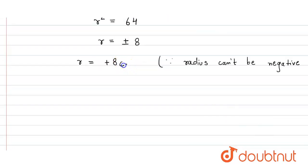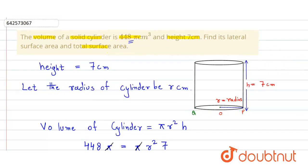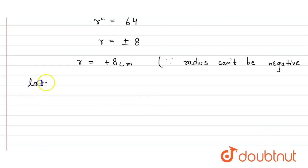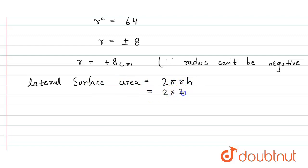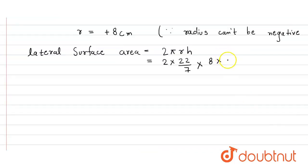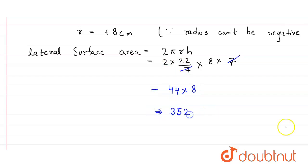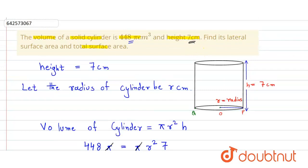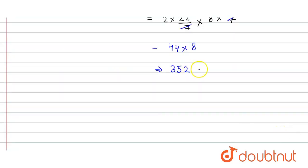Now we find the lateral surface area and the total surface area. The lateral surface area equals 2πrh, which is 2 × (22/7) × 8 × 7. The 7 cancels, giving us 352 centimeter square.